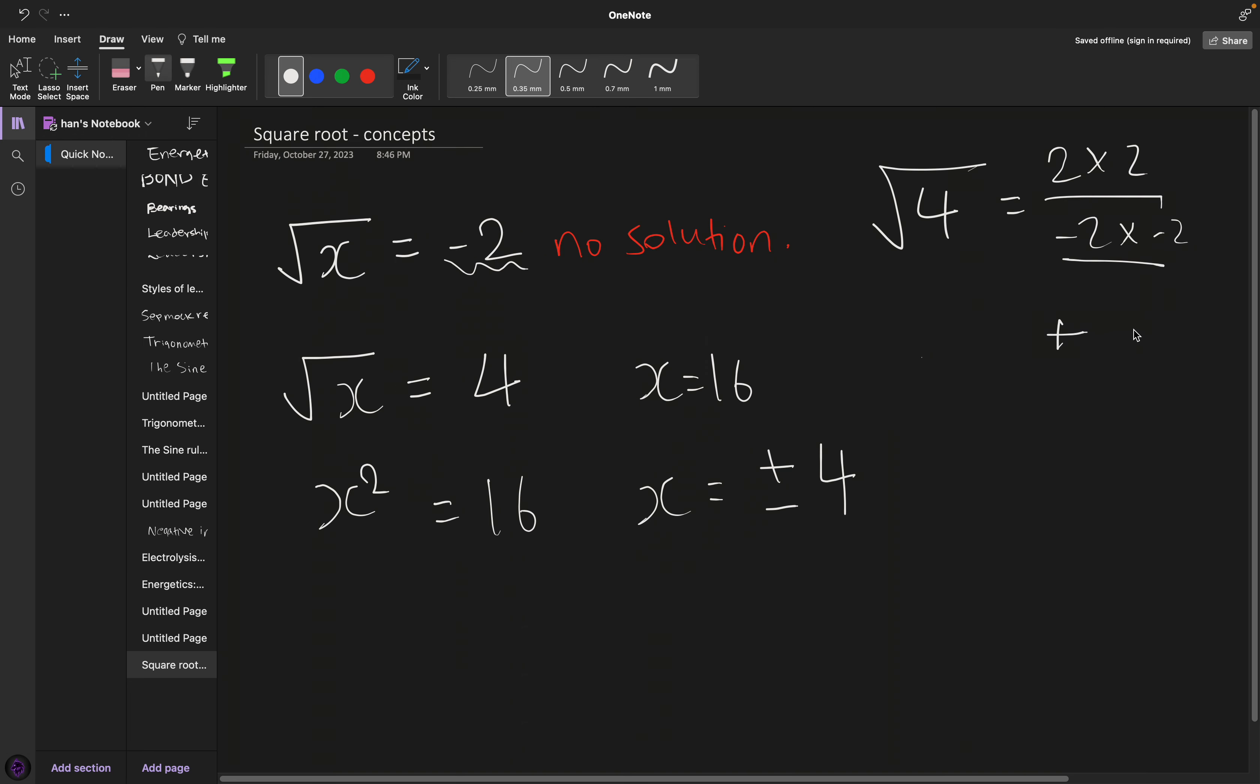If you multiply a positive and a negative, that gives you a negative. But that's not squaring, because squaring is multiplying identical numbers. These aren't identical numbers. So there is no solution that gives an output of a negative number.